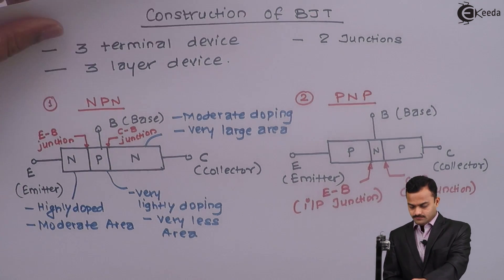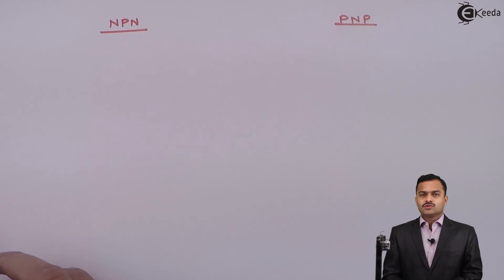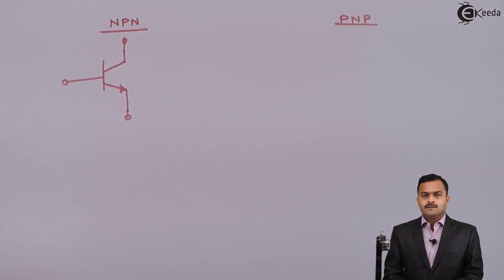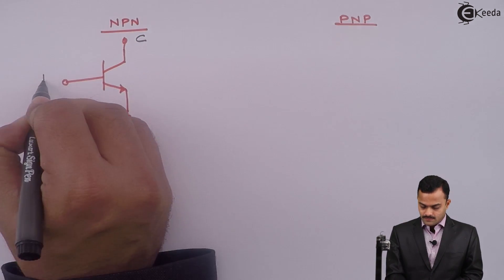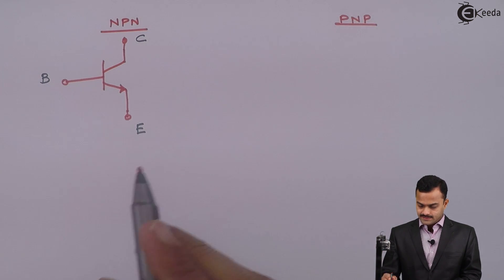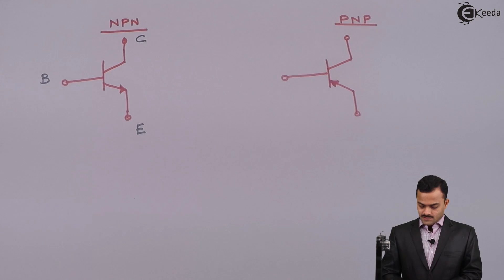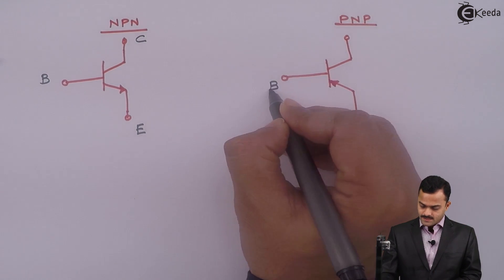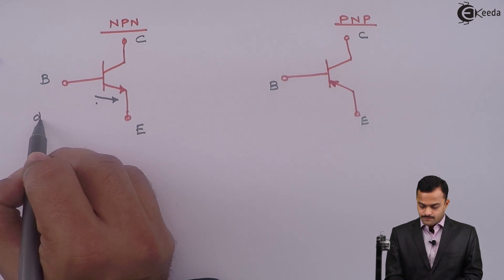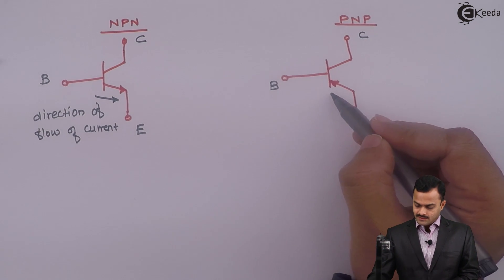Let's draw a symbol for NPN and PNP transistors. NPN transistor has three terminals: collector, base, and emitter. For PNP transistor, terminals are emitter, base, and collector. This arrow represents direction of flow of current.